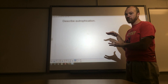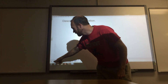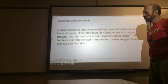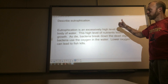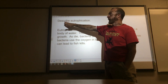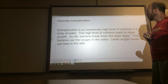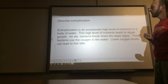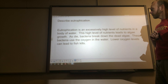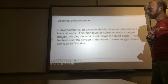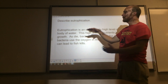This doesn't have to be super lengthy, but it has to be more than just a definition. Here's an example written out — just a couple of sentences: 'Eutrophication is an excessively high level of nutrients in a body of water. This high level of nutrients leads to algae growth. Bacteria break down the dead algae; these bacteria use the oxygen in the water, and lower oxygen levels can lead to fish kills.' I've defined it, but I went beyond — I told a little about what causes it and the effects. Now I've given a description of eutrophication.